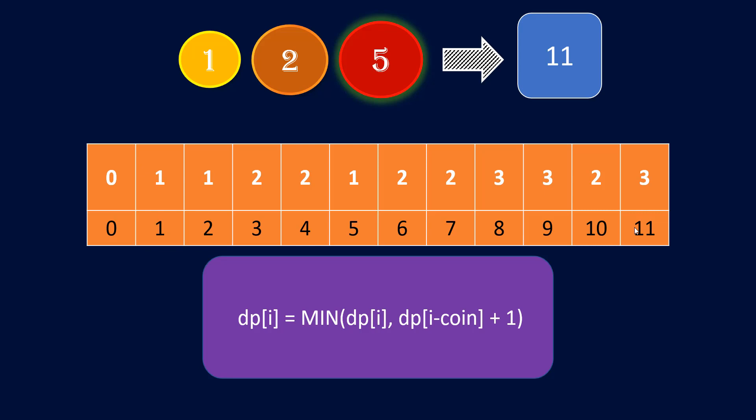The time complexity is the number of coins multiplied by the amount, that is O(c * n), and the space complexity is O(amount) for the DP array. Let's quickly go and code it out.